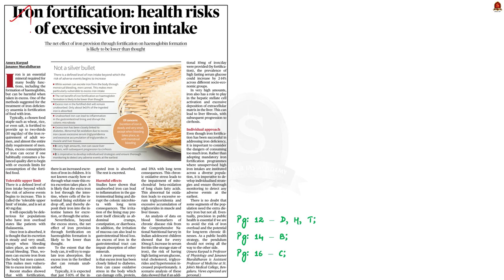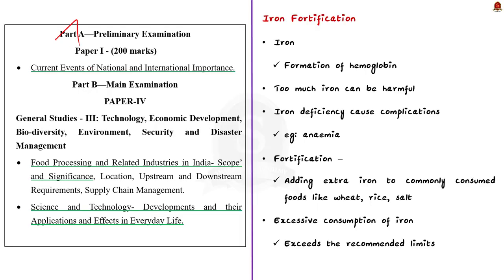Now look at this article from yesterday's science page. It talks about the risks of iron fortification. As we all know, iron is an essential mineral that our bodies need for various functions. Most importantly, iron is crucial for the formation of hemoglobin, which carries oxygen in our blood. However, this article says that too much iron can be harmful, so iron should be taken in moderation.